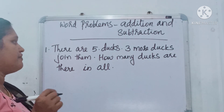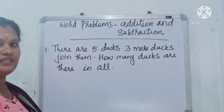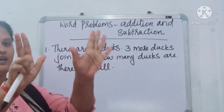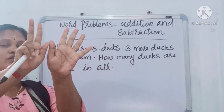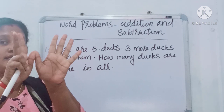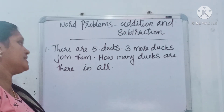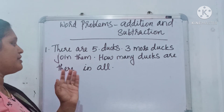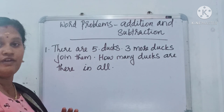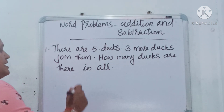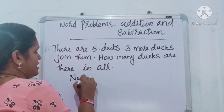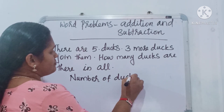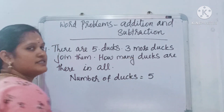Question: There are 5 ducks. 3 more ducks join them. Total — how many ducks? That is what we have to find. While solving word problems, we should write some statements. What is the first statement? Number of ducks in the pond equals 5. Clear?